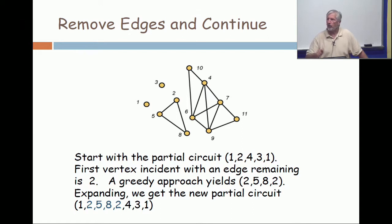It does not go two, eight, five, two. The greedy approach will go around the circuit in the order that I've indicated. Okay. So, then, you take the circuit two, five, eight, two and extend the original one by taking the two and opening it up to two, five, eight, two.